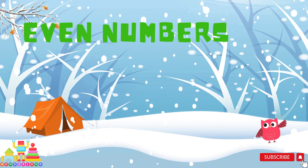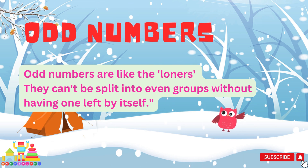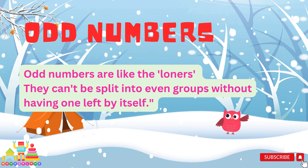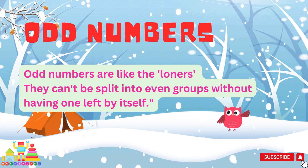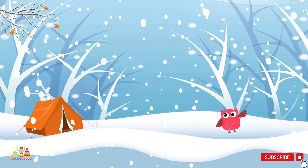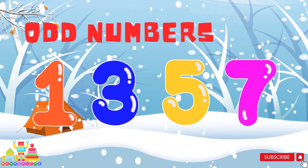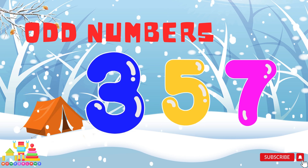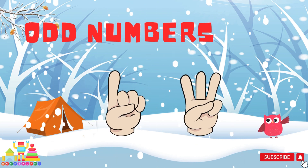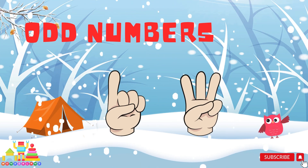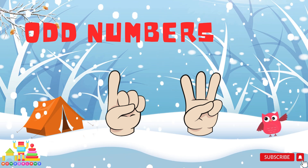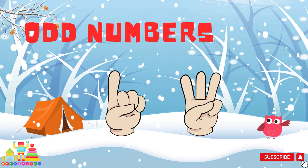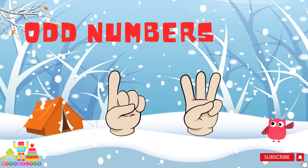Odd numbers are like the loners — they can't be split into even groups without having one left by itself. Odd numbers: one, three, five, seven. For example, only one finger is an odd number because it is alone. Three fingers are also an odd number because one finger is left alone after a group of two fingers.